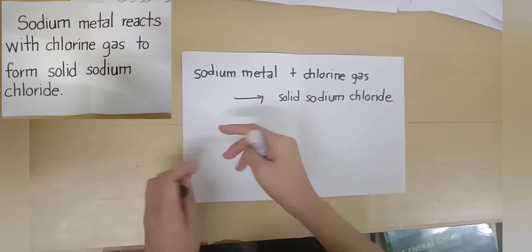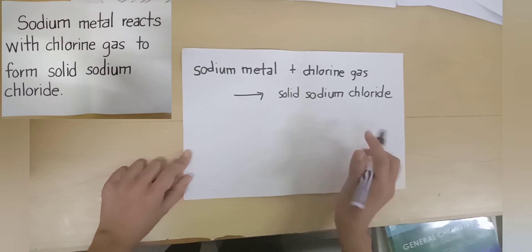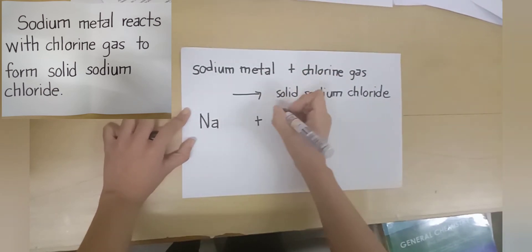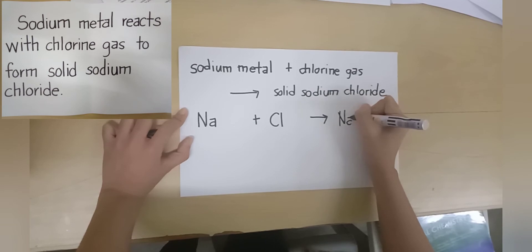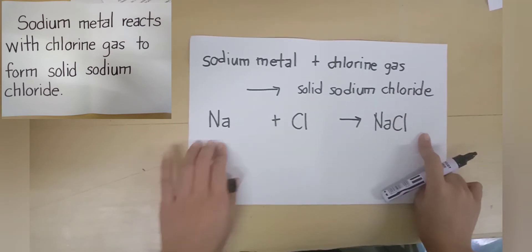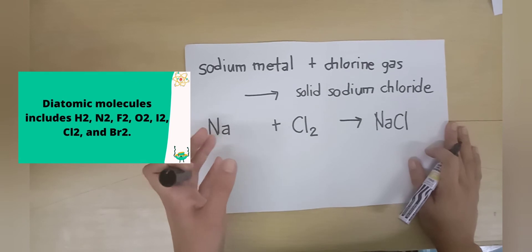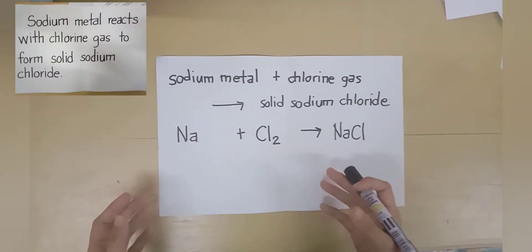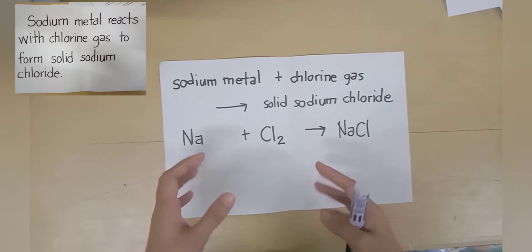Now let us express these substances into their respective chemical formulas. Sodium has the symbol Na. Chlorine has the symbol Cl. Sodium chloride is NaCl. We write the subscript 2 for chlorine because chlorine gas exists as a diatomic molecule, like iodine, oxygen, nitrogen, and bromine. Unlike the first example, we have here additional keywords like 'metal,' 'gas,' and 'solid,' which represent the state of these substances.